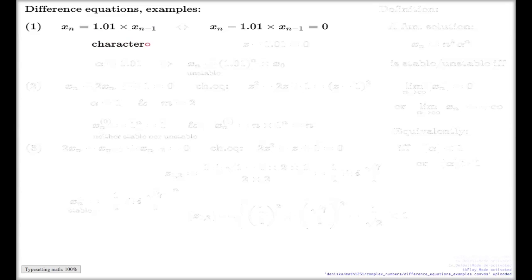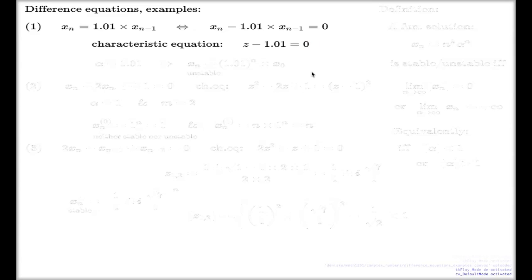Let's just look at the examples. The first example we had was this one, which you can convert into the difference equation of the canonical form from the slide before if you just rearrange the terms like this. And so the characteristic equation for such a difference equation is this one.